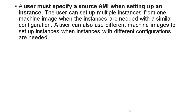A user must specify a source AMI when setting up an instance. The user can set up multiple instances from one machine image when instances with a similar configuration are needed. A user can also use different machine images to set up instances when instances with different configurations are needed.